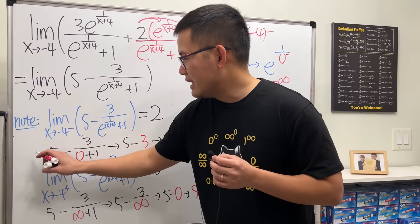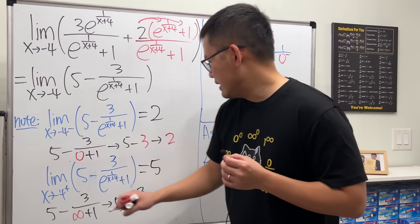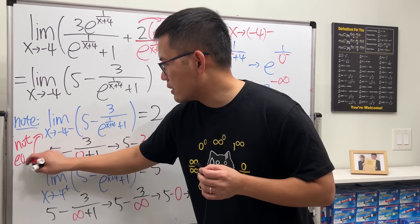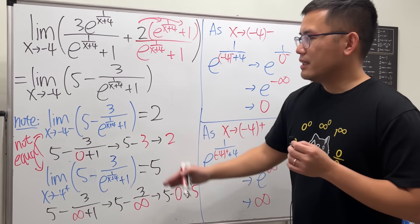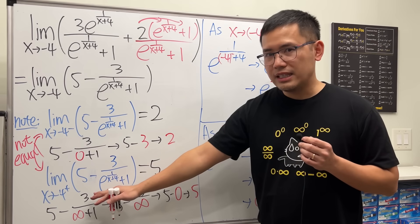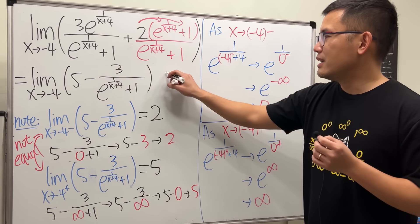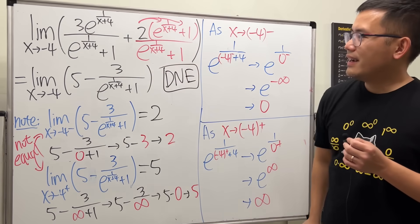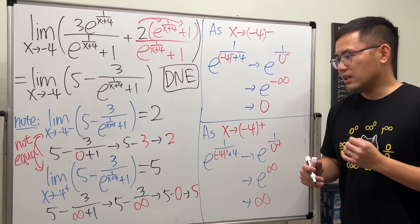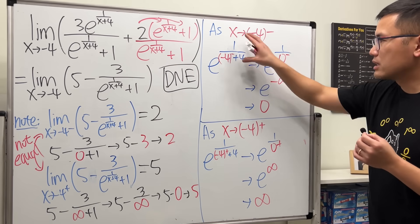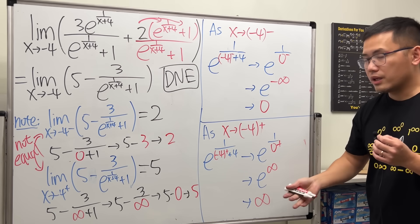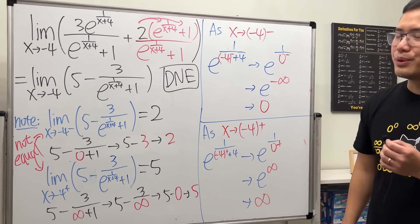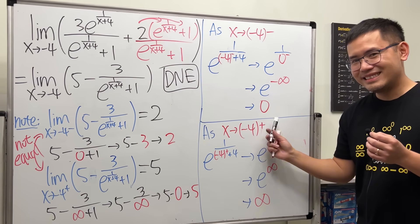The left-side limit is two and the right-side limit is five — they are not equal. If the left-side limit and the right-side limit are not equal, then this limit does not exist. This problem requires a lot of investigating and working out the details patiently. Hopefully this video helps — make sure you try the other two questions!